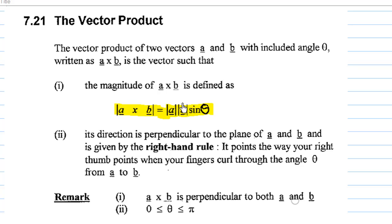And what is the direction of this a cross b? The direction is perpendicular to the plane containing a and b. That means it is perpendicular to both a and b, and is given by the right-hand rule, which means it points the way your right thumb points when your fingers curve through the angle theta from a to b.